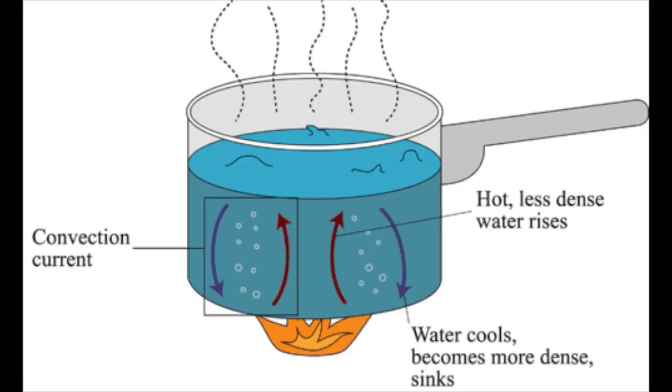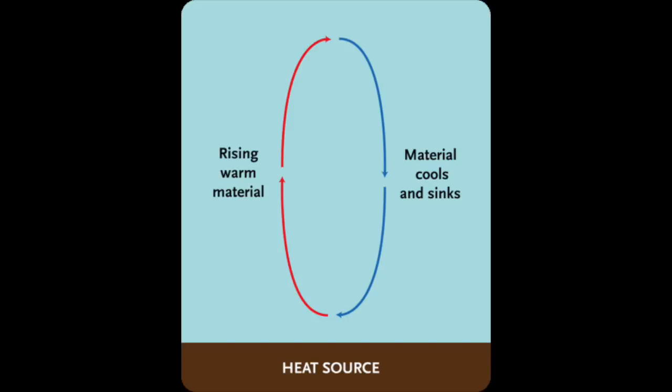If you're wondering what a convection current is, you've probably seen this in real life and maybe just not understood it, but boiling a pot of water is really creating a convection current. It's the hot water from the bottom of the pan near the burner rising, and the cooler water near the top sinking down.